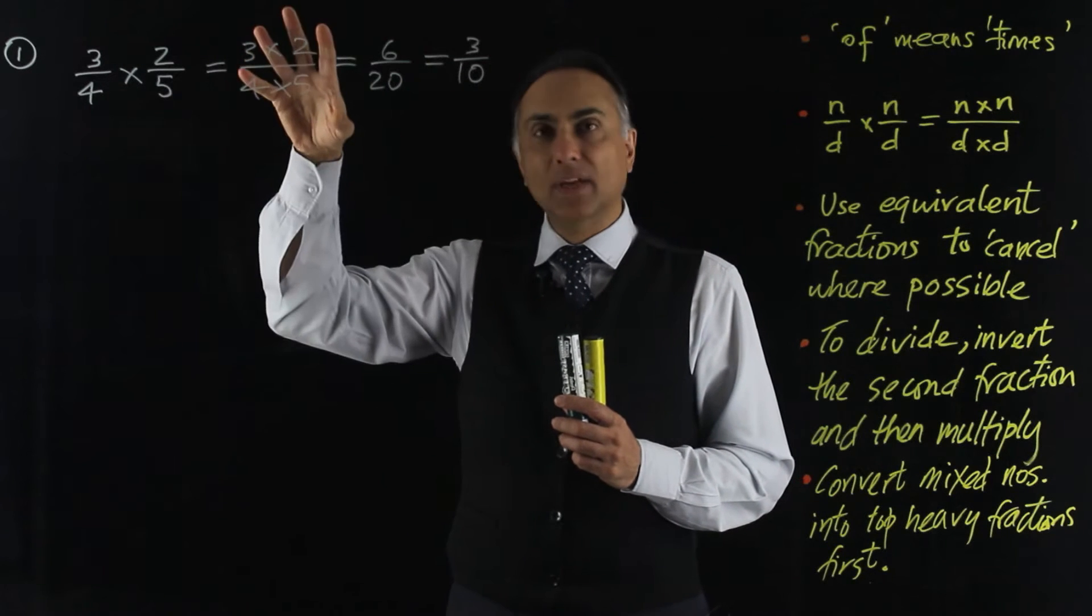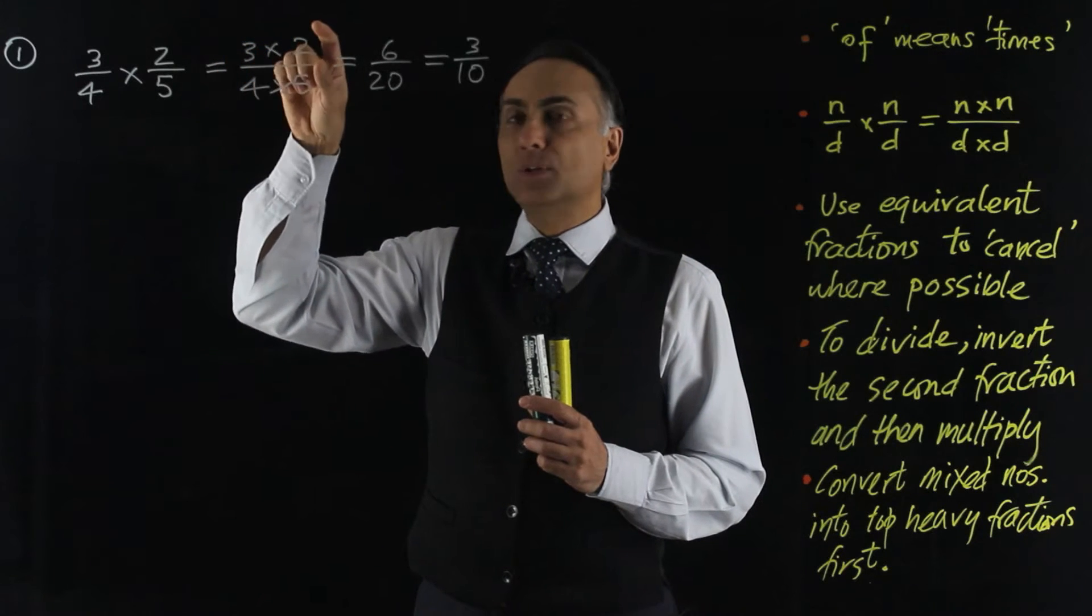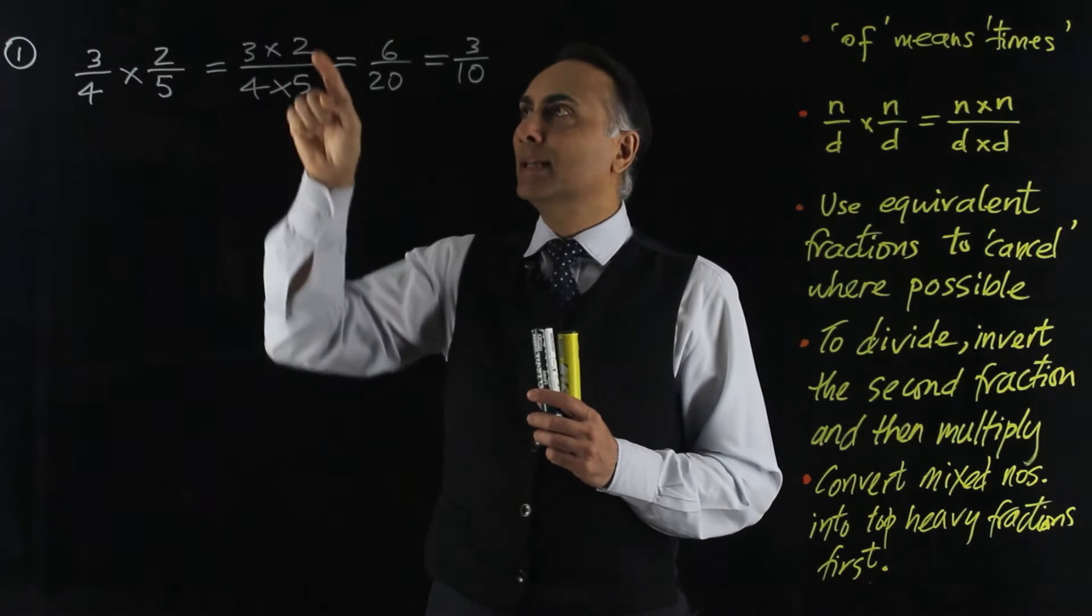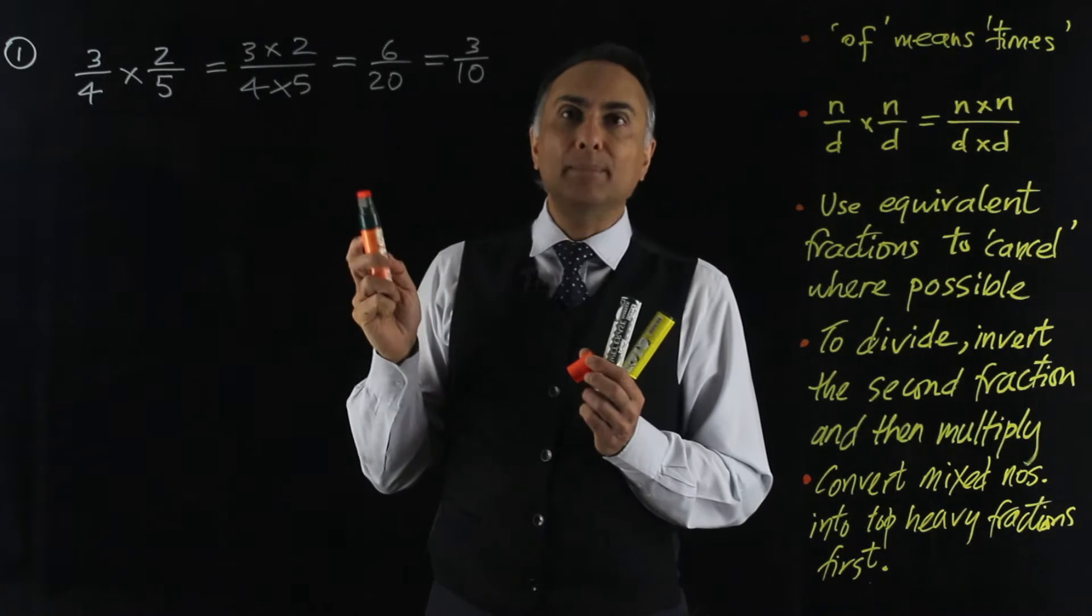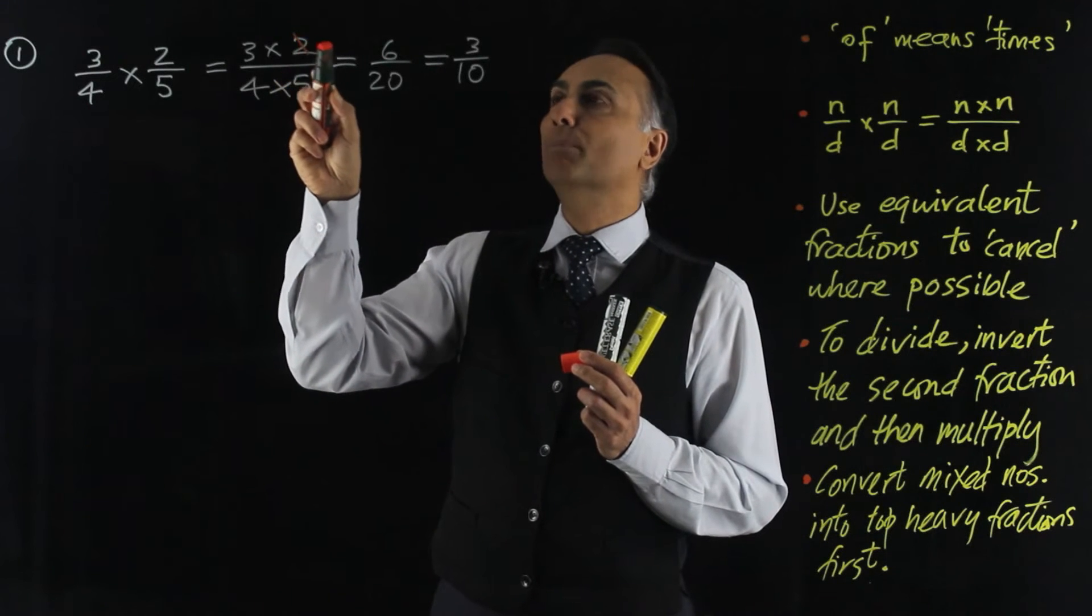I did that at the end, but I could have done it here. So the numerator here is 3 times 2 and the denominator is 4 times 5. And I notice that 2 and 4 can both be halved. That means I could at this stage have said divide 2 by 2.